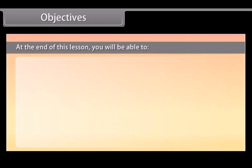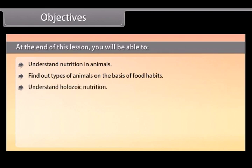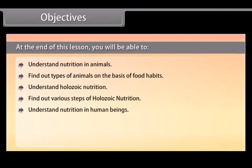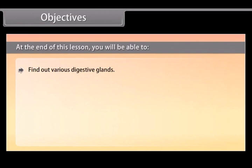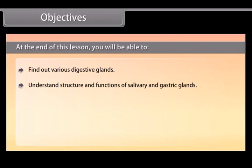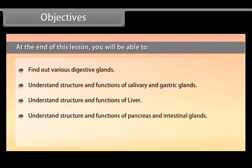At the end of this lesson, you will be able to understand nutrition in animals, find out types of animals on the basis of food habits, understand holozoic nutrition, find out various steps of holozoic nutrition, understand nutrition in human beings, find out various organs of the digestive system, understand structure and functions of mouth, find out various digestive glands, understand structure and functions of salivary glands and gastric glands, understand structure and functions of liver, understand structure and functions of pancreas and intestinal glands, and study the chemistry of digestive glands.